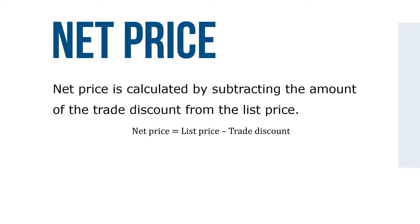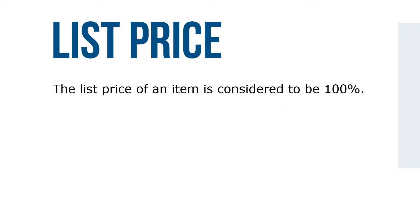Net price is calculated by subtracting the amount of the trade discount from the list price. The list price of an item is considered to be 100%. For example, with a trade discount of 40% of list price, the net price will be 60%, because the two must equal 100%. This 60% is the complement of the trade discount rate — 100% minus 40% — and is the portion of the list price that is paid.